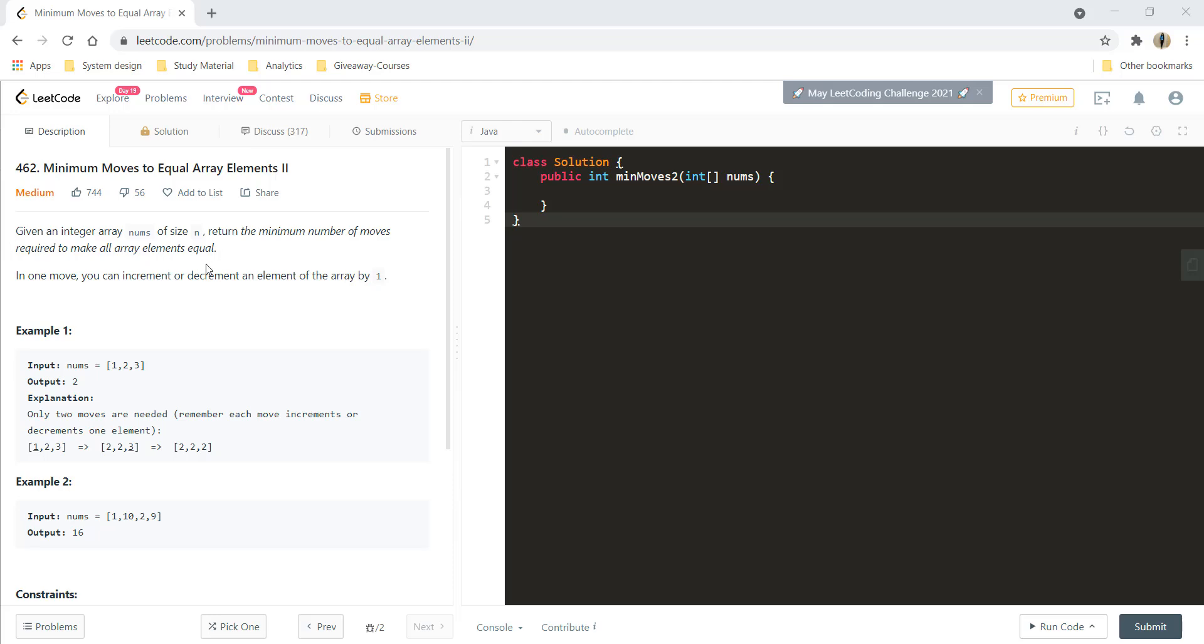Given an integer array nums of size n, return the minimum number of moves required to make all the array elements equal. In one move, you can either increment or decrement an element of the array by one.